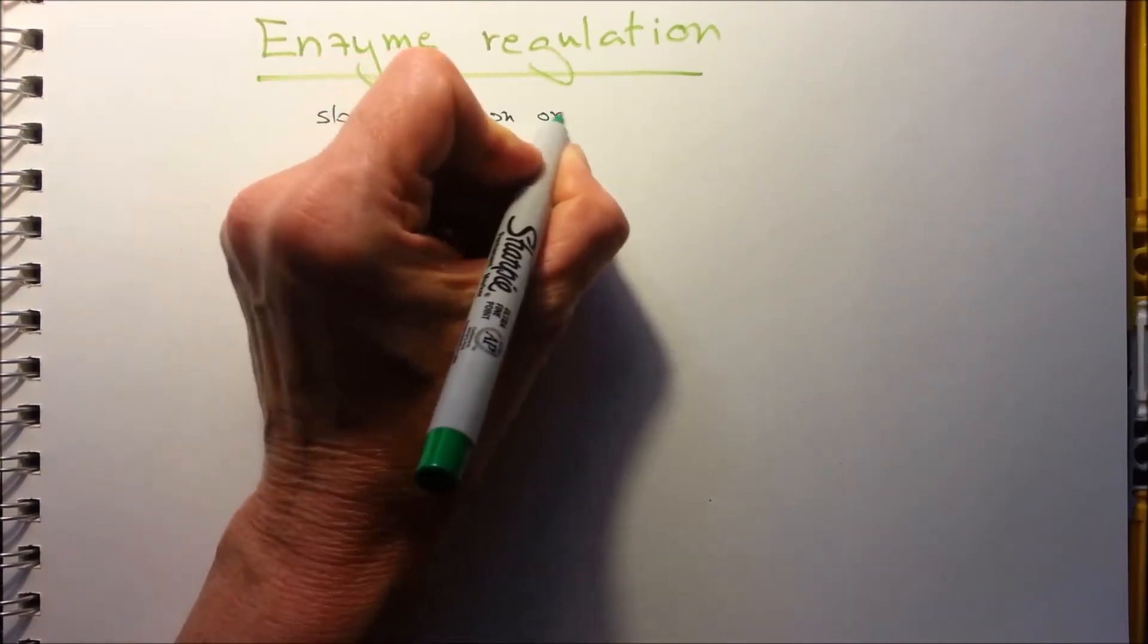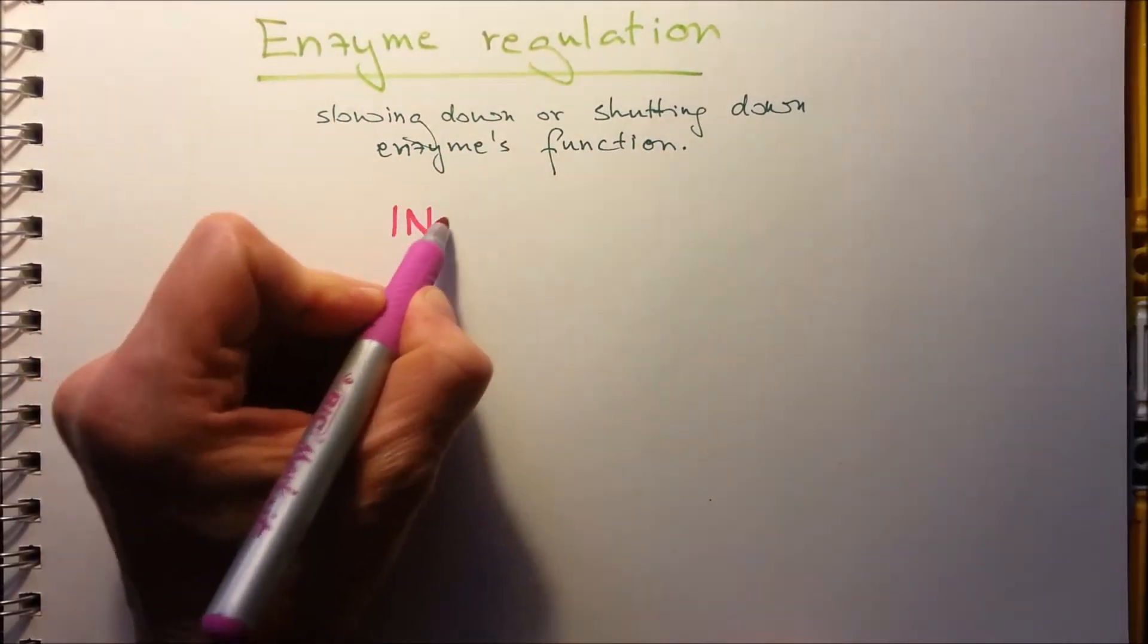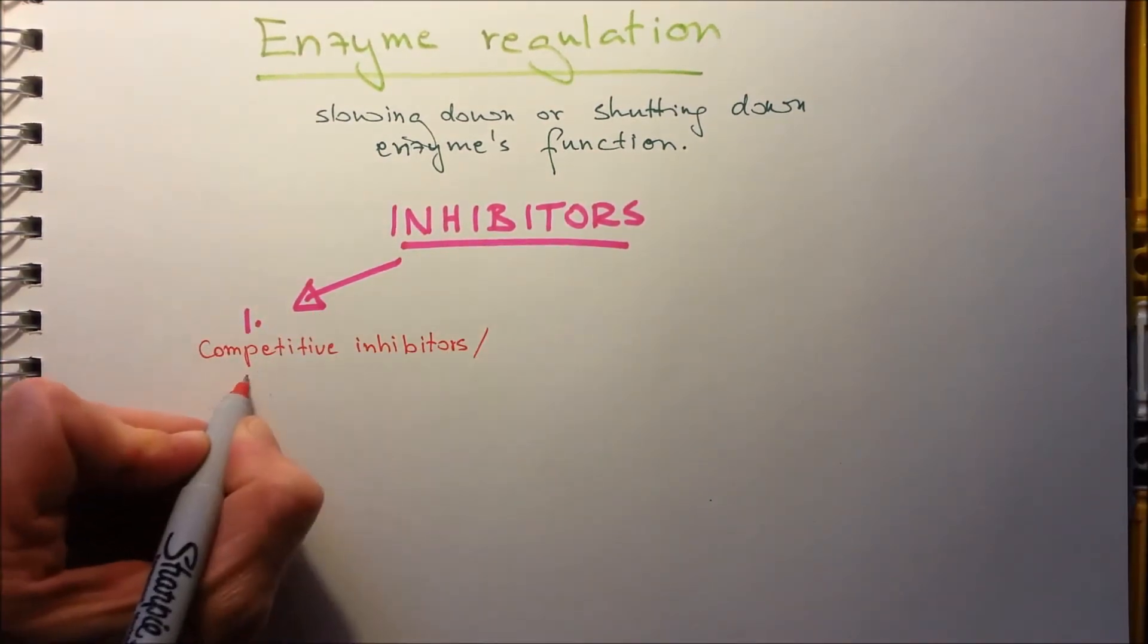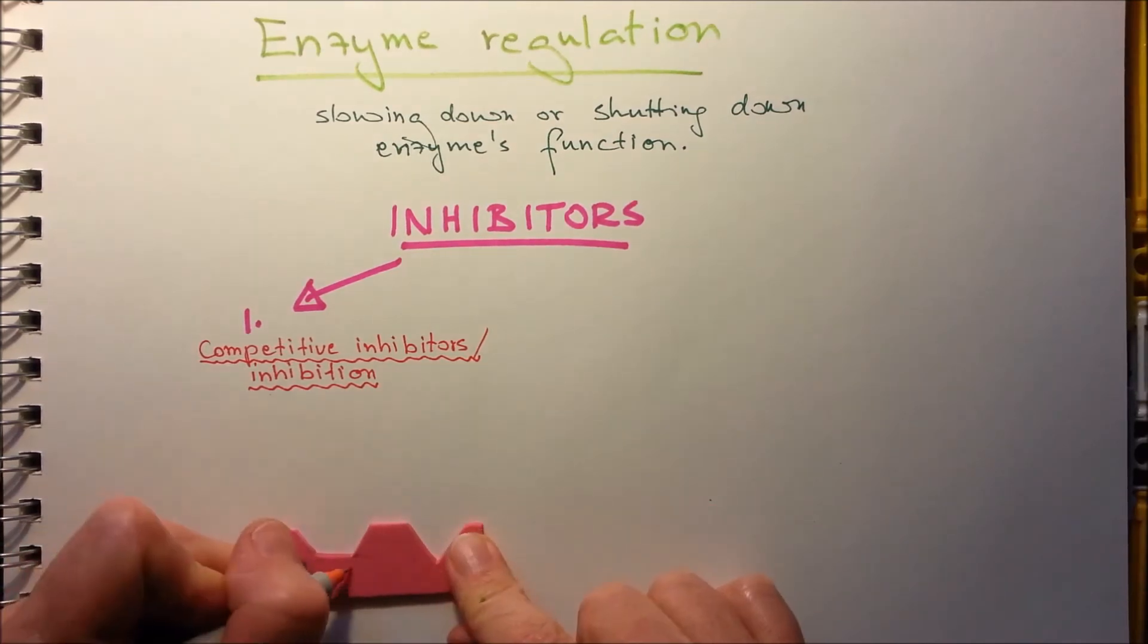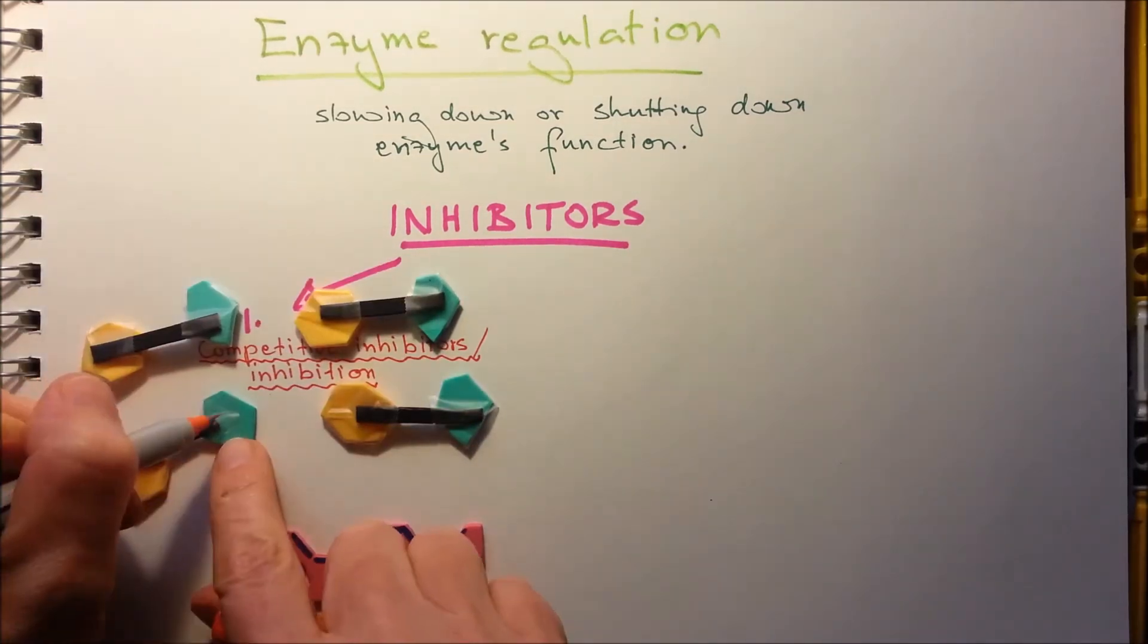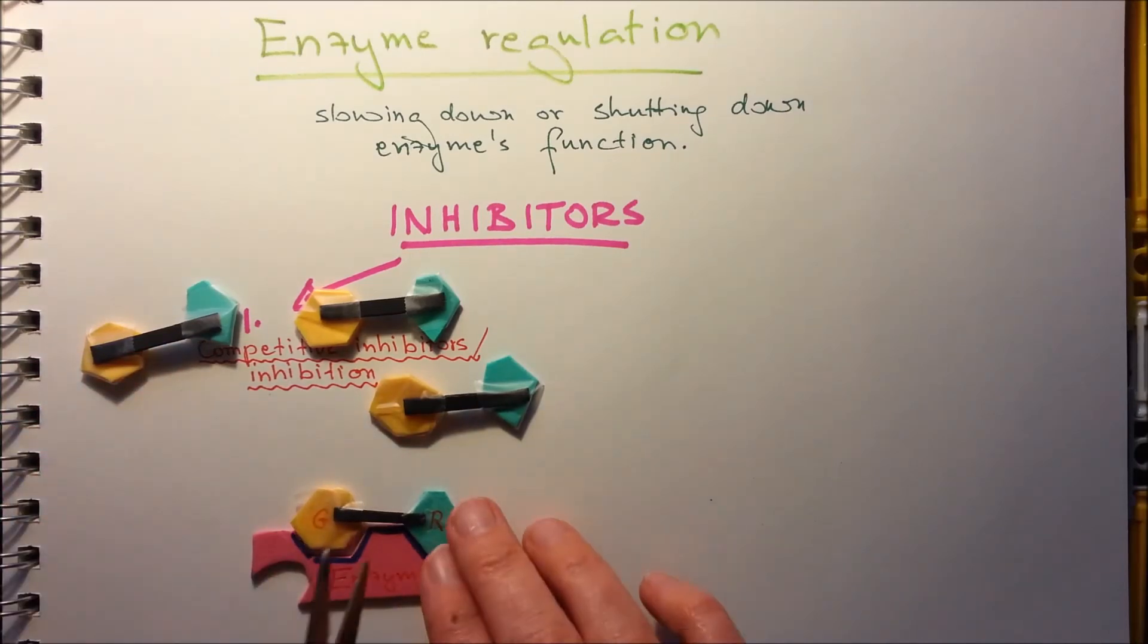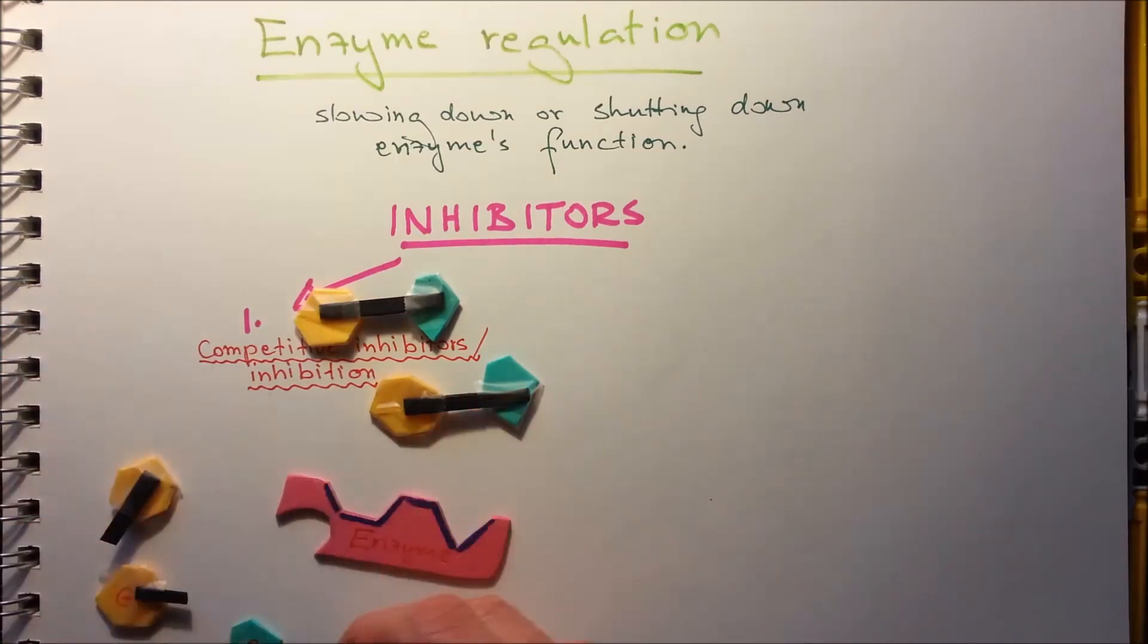Chemicals that interfere with an enzyme's activity is called an inhibitor, slowing down or shutting down the enzyme's capability in the chemical reaction. Inhibitors can be competitive inhibitors or competitive inhibition. Here is an enzyme with the active site. Let's say this is a disaccharide, and it's going to go through hydrolysis with the help of the enzyme. The molecule will sit into the active site, and hydrolysis will produce two monosaccharides, and these are going to be the products.